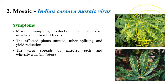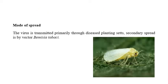Stunting of plants can also be observed. If we split open the tuber inside the soil, we can clearly see yield reduction as well as discoloration. This disease is mainly spread by the insect vector whitefly, Bemisia tabaci.